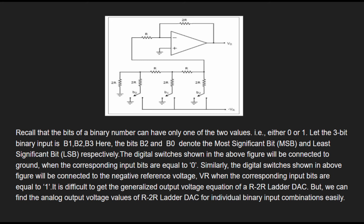Here the bits b2 and b0 denote the most significant bit (MSB) and the least significant bit (LSB) respectively. The digital switches shown in the above figure will be connected to ground when the corresponding input bits are equal to zero. Similarly, the switches will be connected to the negative reference voltage Vr when the input bits equal one. It is difficult to get a generalized output voltage equation for the R2R ladder DAC, but we can easily find the analog output voltage values for individual binary input combinations.